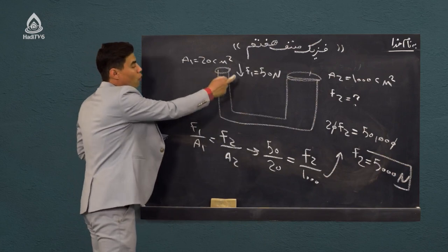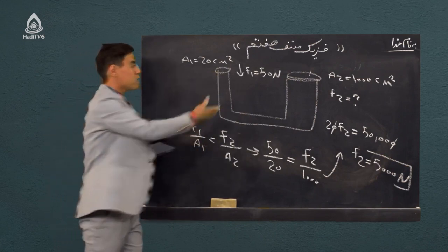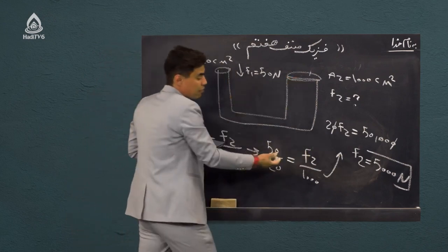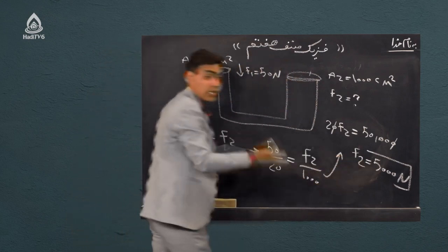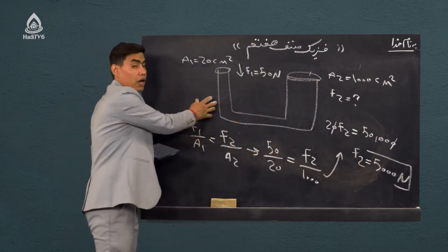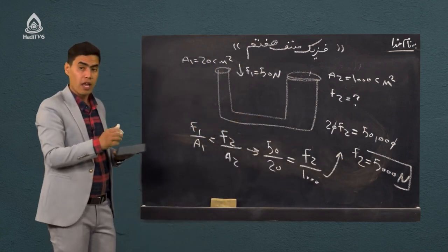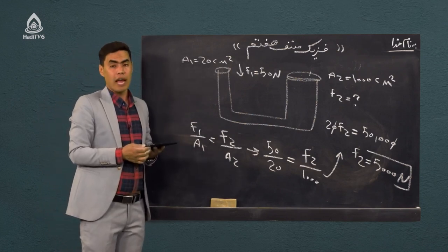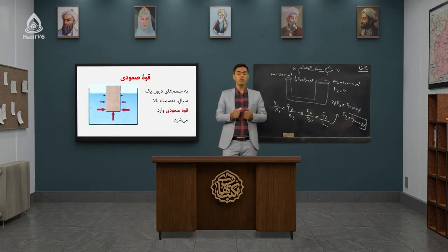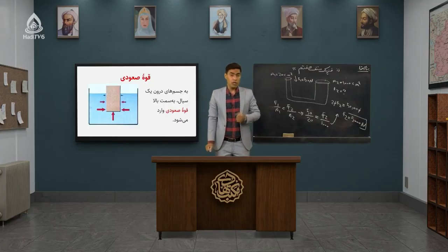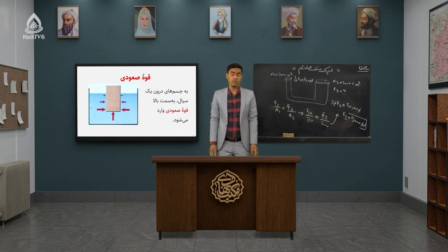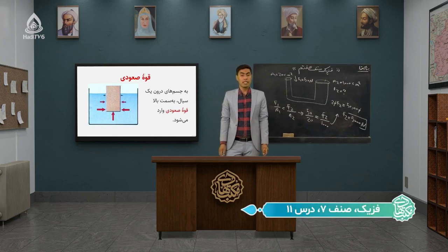خیلی جالب است. شما نگاه کنید — بر پیستون کوچک قوه بسیار کمی یعنی پنجاه نیوتن اعمال کردید و توانستید جسمی که وزنش پنج هزار نیوتن است را بالا ببرید. پس بالابرهای هیدرولیکی همین کار را میکنند: با اعمال یک قوه بسیار کم، میتوانیم اجسام سنگین را از جایش بلند کنیم. این مروری بود بر درس جلسه قبل. اما درس امروز ما...